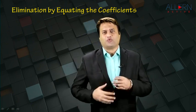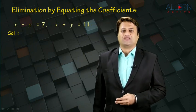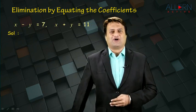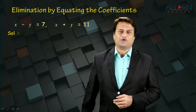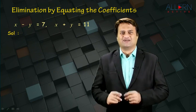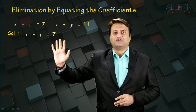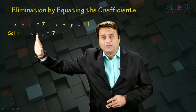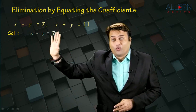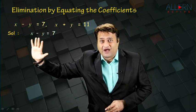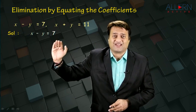Let us do a quick revision of what you have done in 9th standard. The sum is: x minus y is equal to 7 and x plus y is equal to 11. In this method, the first thing required is that the given equation should be in the form of variables on one side and the constant on the other side.